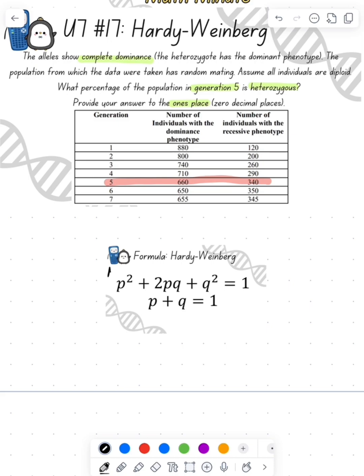P squared is the frequency of our homozygous dominant, 2PQ is the frequency of our heterozygous, Q squared is the frequency of our homozygous recessive, P is the frequency of our dominant allele, and Q is the frequency of our recessive allele.